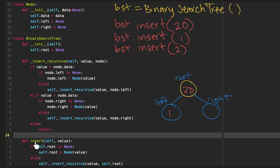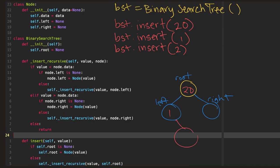Let's continue with another insert — this time we'll insert 2. Root is not none, so we call the recursive function again, passing in the root and value 2. Our value 2 is less than our root 20, but our left node of our root is not none — it's 1. So we call the recursive function again, this time passing our 2 and our left node, which is 1. Now 2 is not less than 1; 2 is greater than 1. This node's right node is none, so we just add our 2 there.